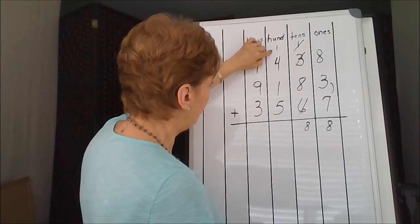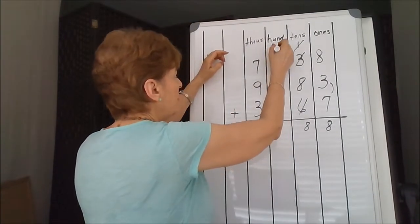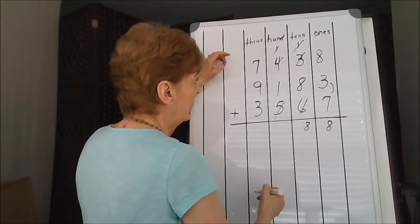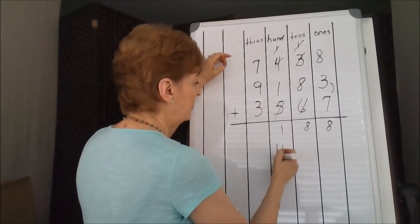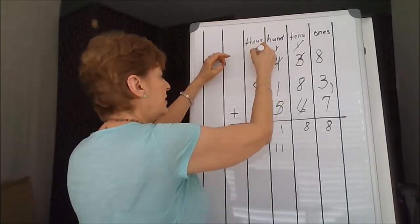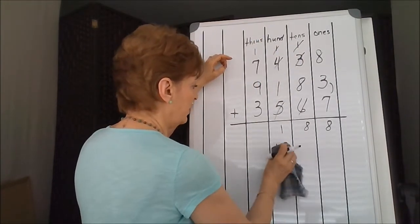1 plus 4 is 5. 5 and 5 is 10. So we have this as a 10 combination, and one more is 11. Put down the 1, carry the 1 that's in the tens position on this one.